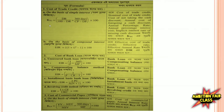KTC is the cost of trade credit. The formula is: DR divided by (100 minus DR), multiplied by 360 days divided by (CB minus DB), multiplied by 100. KTC is the cost of trade credit.